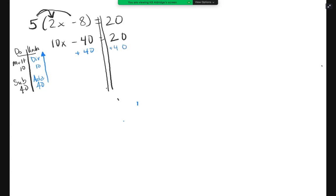Add 40. Okay. Negative 40 plus 40 is 0. So I have 10x equals 20 plus 40 is 60. My next step following my undo is divide by 10. Divide by 10. x equals 6.